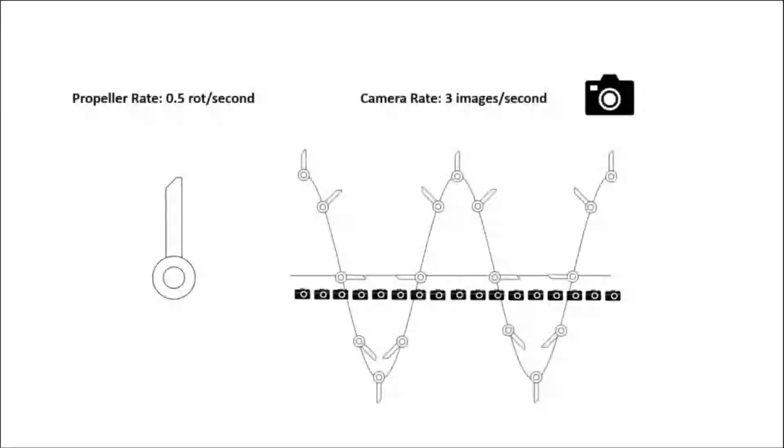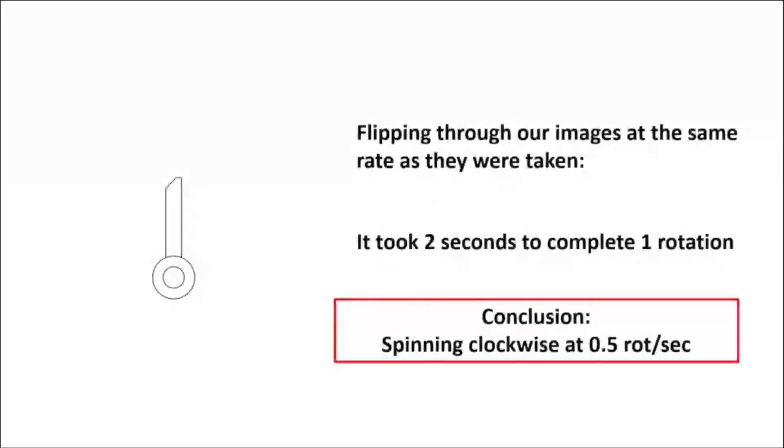So let's look at the resulting images. If we flip through our images at the rate we took them, similar to a flipbook, the propeller would appear to spin. From these images it takes two seconds to complete one rotation, so we would conclude the propeller was spinning clockwise at half a rotation per second, which it was.